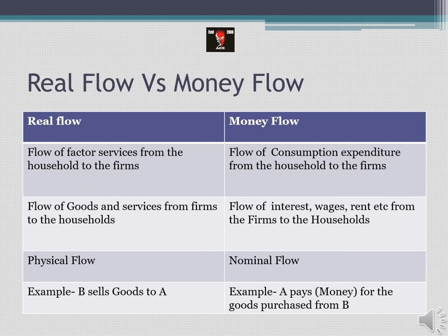Similarly, when the firms provide the households with goods and services, that becomes real flow. When the households in return pay consumption expenditure, that becomes money flow. Both of them move simultaneously in the circular flow of income. Real flow is also called physical flow, and money flow is also called nominal flow. For example, if B sells goods to A, then B providing goods to A is a physical product and that becomes real flow; and in return A pays B the money expenditure, so this becomes money flow because income is paid by A to B.